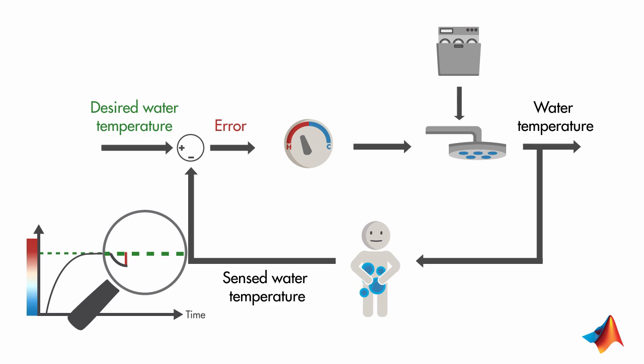To compensate, you turn the shower handle towards the hot side and as the temperature increases to the desired value, the error gets smaller. And the smaller the error gets, the smaller adjustments you make to the shower handle.